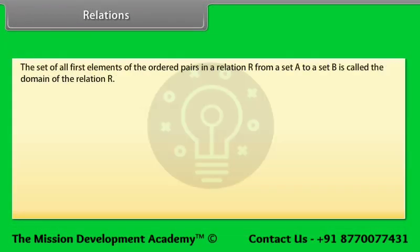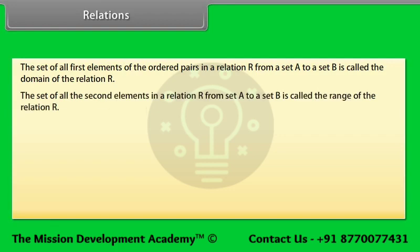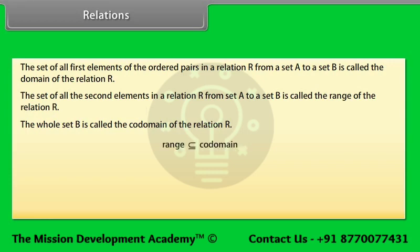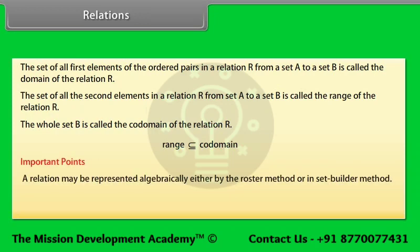The set of all first elements of the ordered pairs in a relation R from set A to set B is called the domain of the relation R. The whole set B is called the co-domain of the relation R. The range is a subset of the co-domain, meaning every element of the range is also an element of the co-domain. A relation may be represented algebraically either by the roster method or set builder method, and an arrow diagram is a visual representation of a relation.